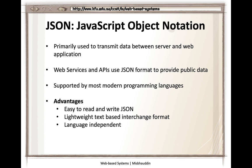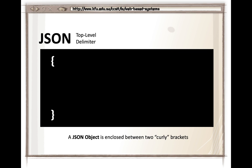This can be done for other data such as weather data, Facebook data, or any other data available through APIs or web services. JSON is supported by most modern programming languages. The advantages of JSON are that it is easy to read and write, it is a lightweight text-based interchange format, and it is language independent — it doesn't depend on a specific programming language.